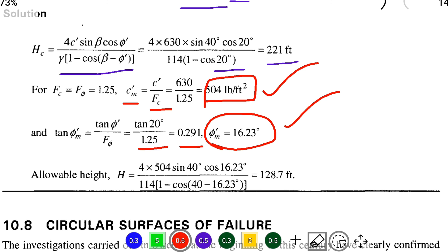From that we can substitute: H_c equals 4 times 504 times sin 40 degrees times cos 16.23 degrees, divided by 114 times 1 minus cos(40 degrees minus 16.23 degrees). Solving this we get the value of 128.7 feet. This is the allowable height.